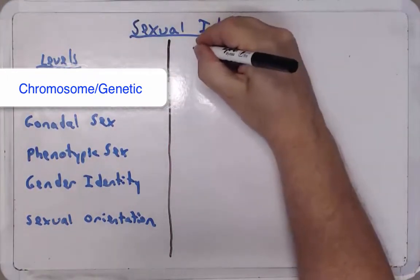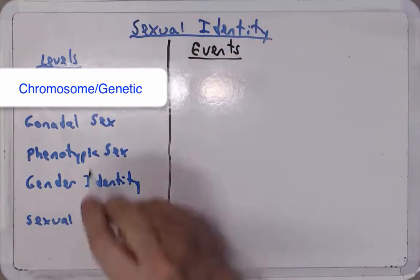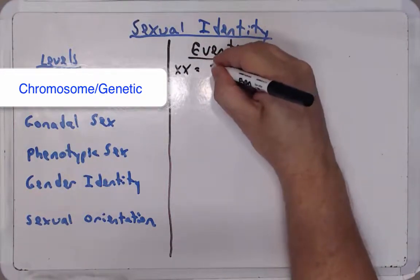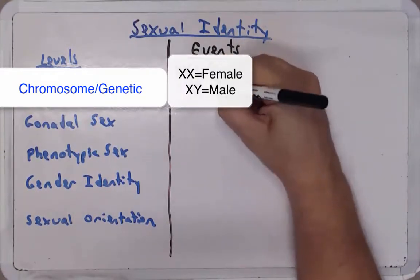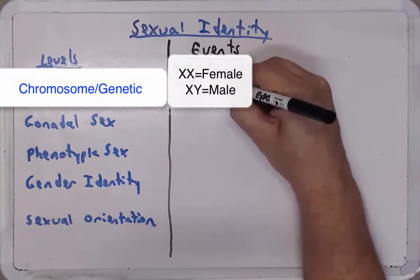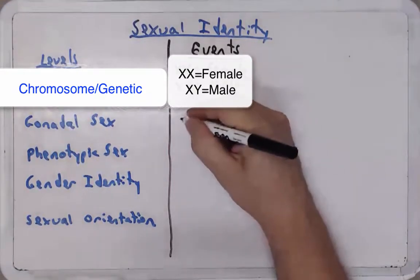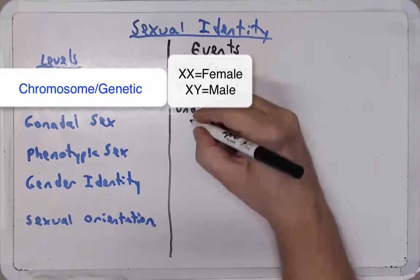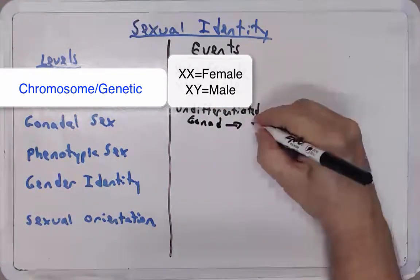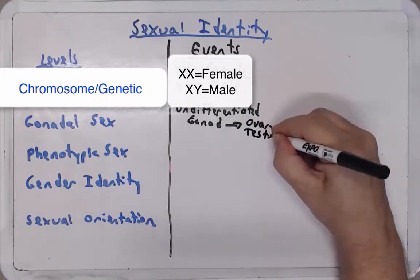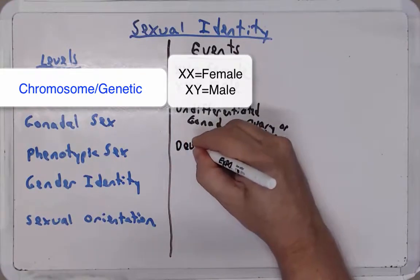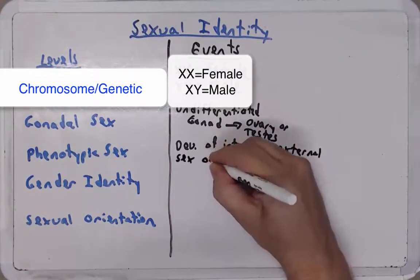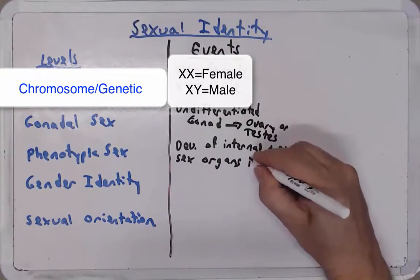Let's think about the events that explain these levels. At the chromosomal and genetic level, XX typically equals female sex, and XY typically indicates male sex. Gonadal sex — which we'll discuss in more detail shortly — is when an undifferentiated gonad develops into either an ovary or testes. Phenotypic sex is defined as the development of internal and external sex organs.